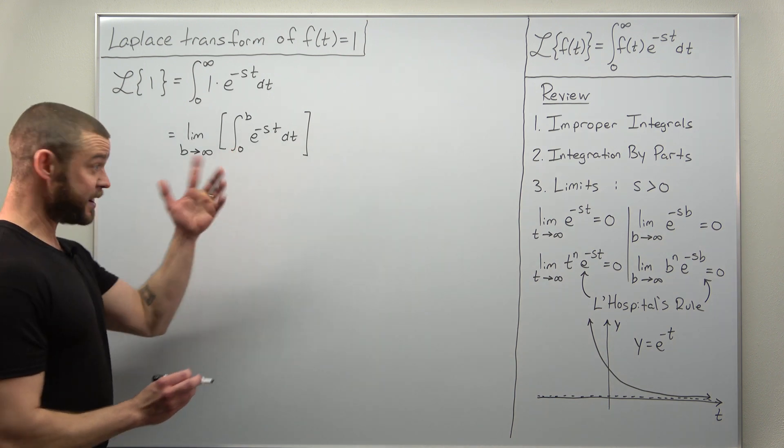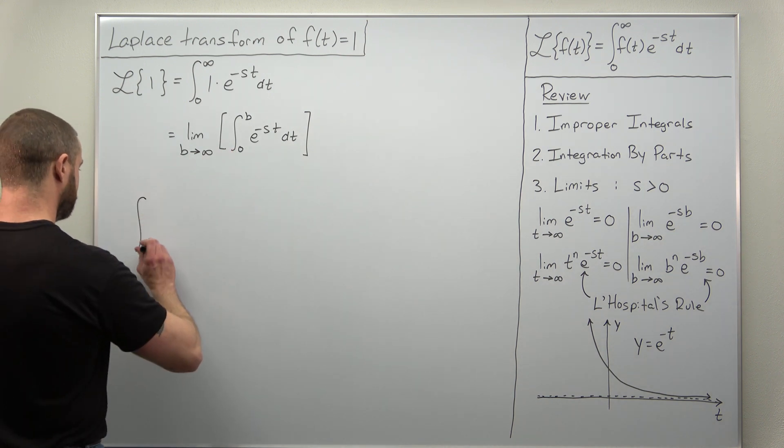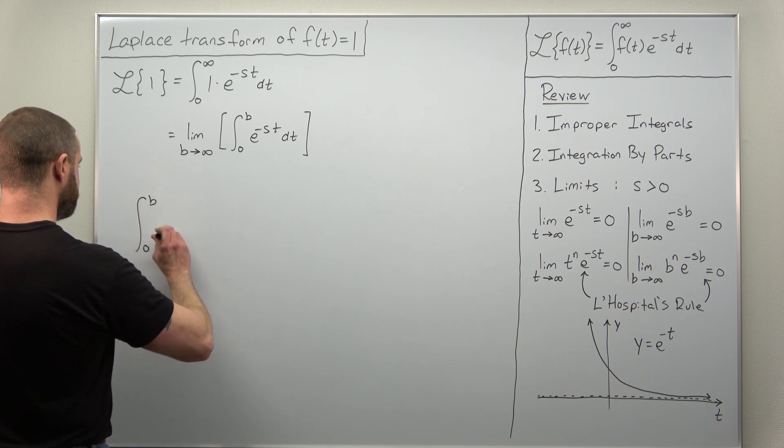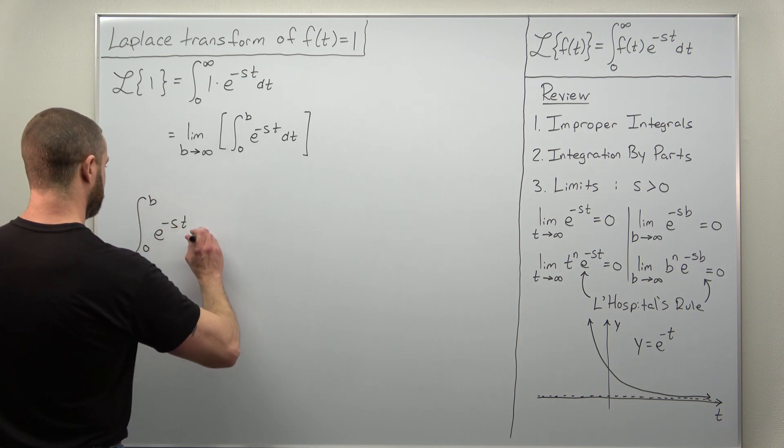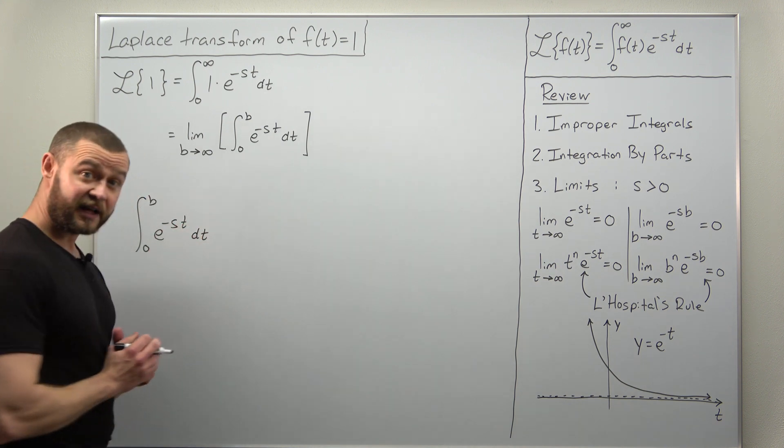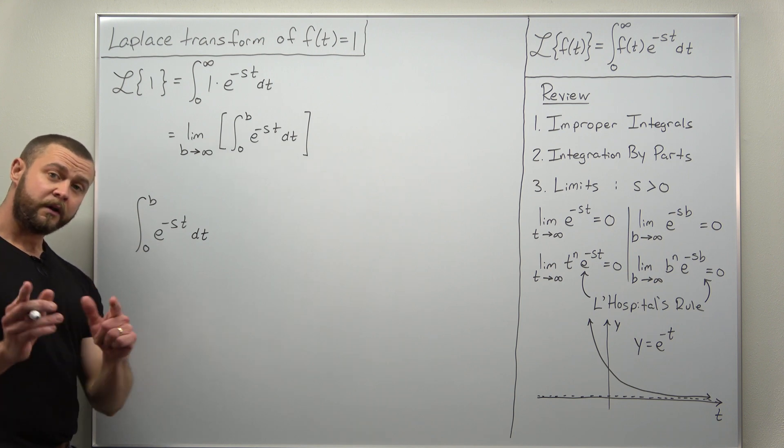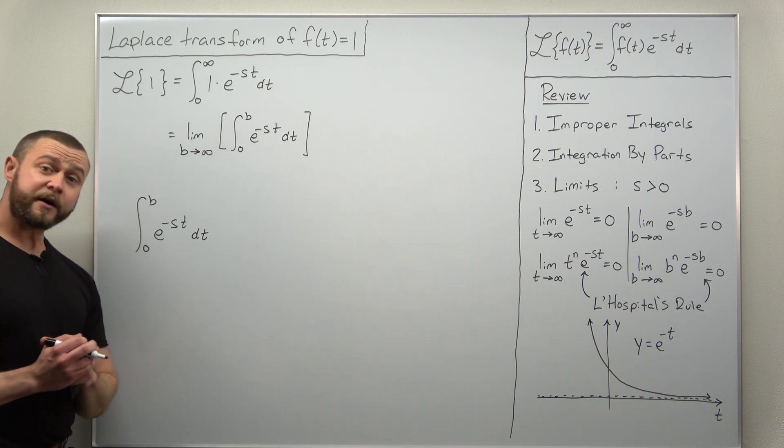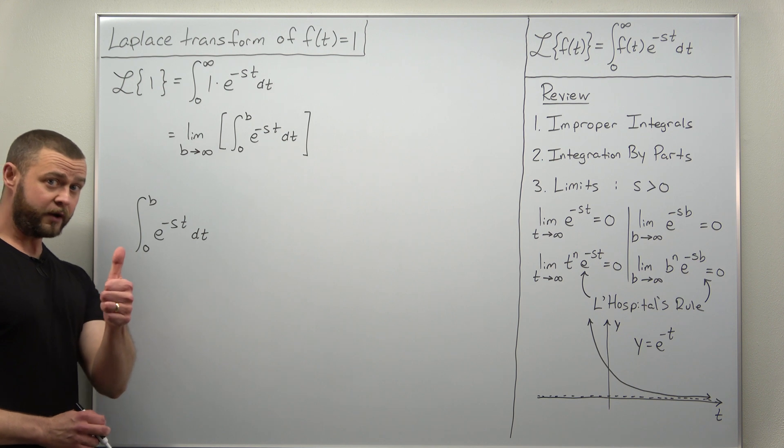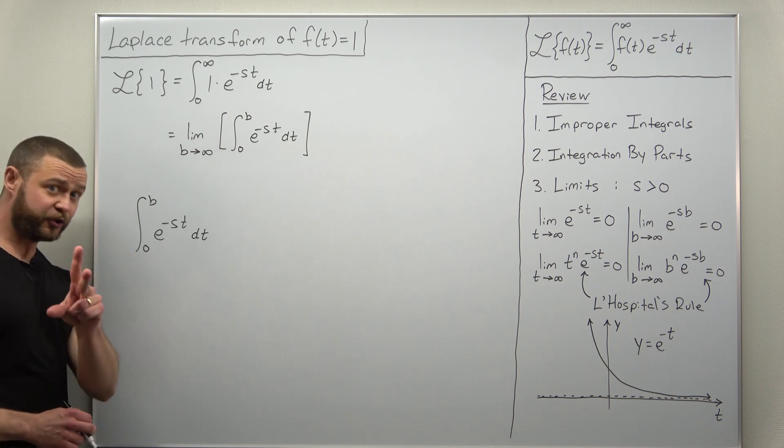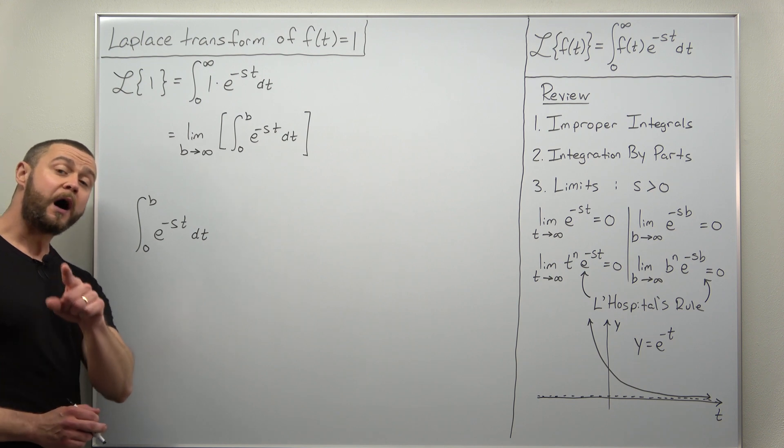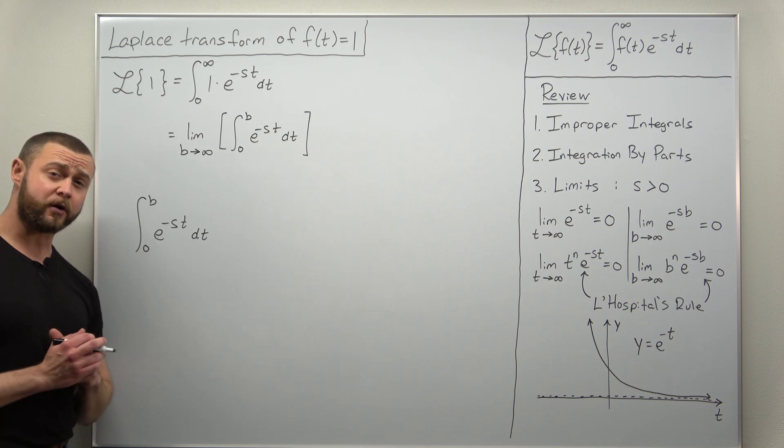So let's evaluate that integral, integral from zero to b of e to the negative st. Now this you should be able to go through very quickly. You can either do a substitution u as negative st, or you can use what I had in a previous video called the one over a shortcut.